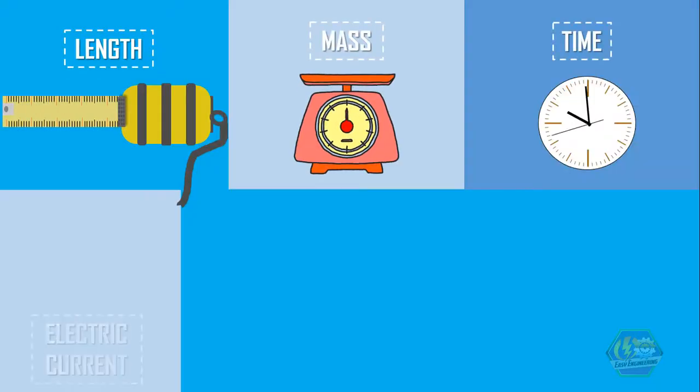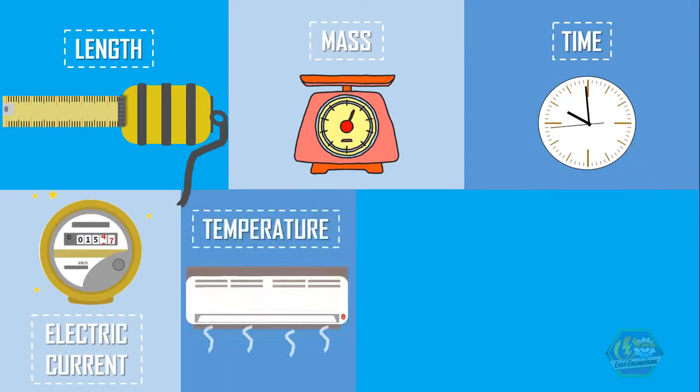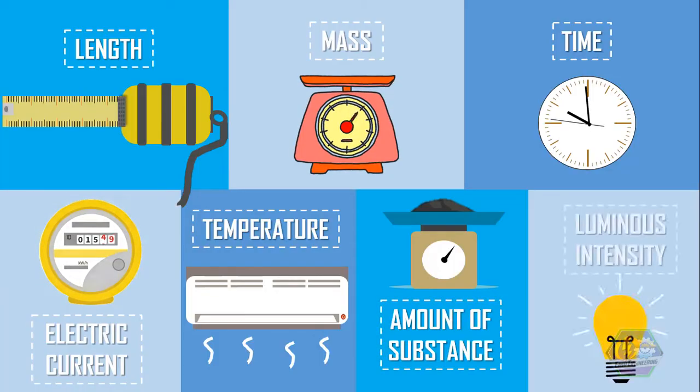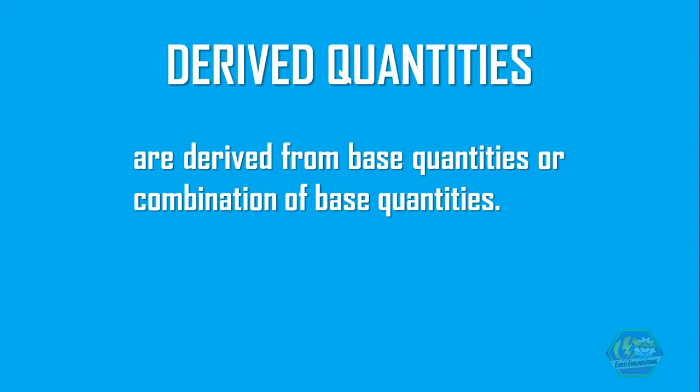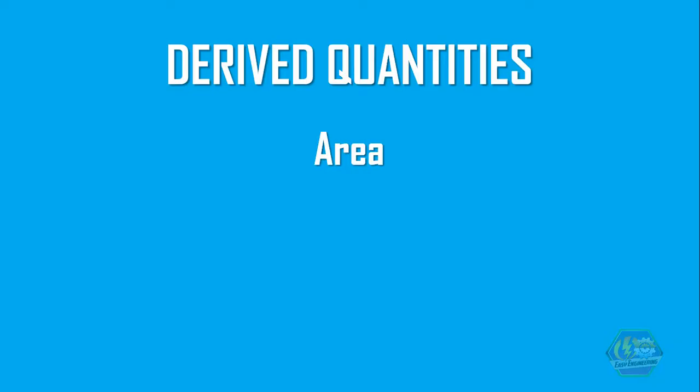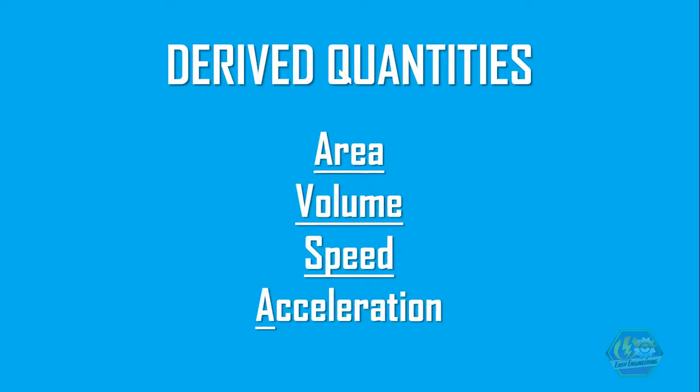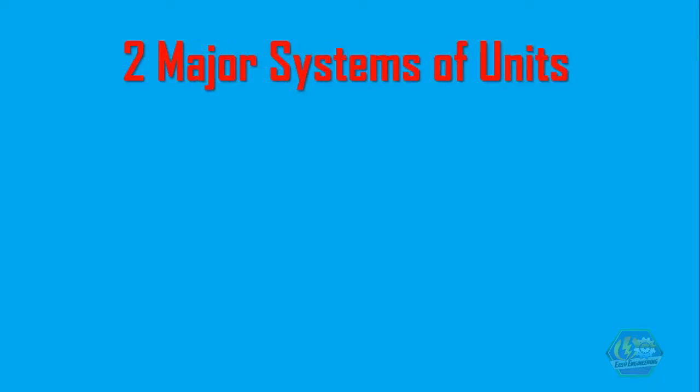On the other hand, derived quantities are derived from base quantities or combinations of base quantities. To name some, these are area, volume, speed, acceleration, and many more.